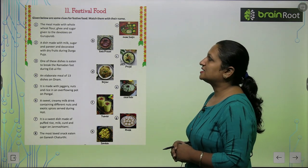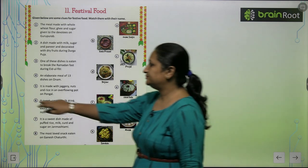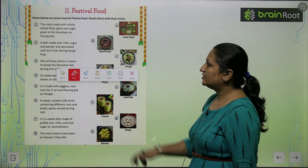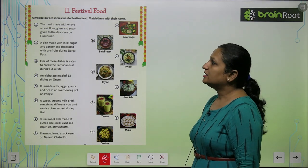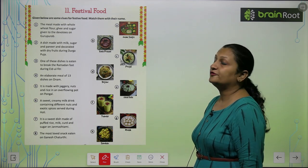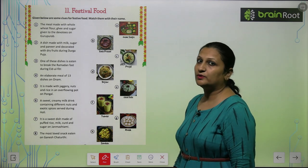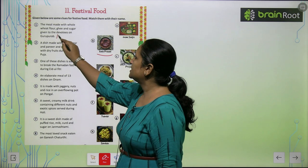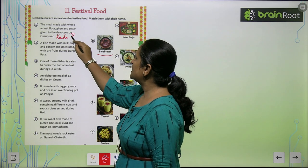Given below are some clues about festive food. Match them with their name. See the first one: the meal made with whole wheat flour, ghee and sugar given to the devotees of Guru Poorab. Toh Guru Poorab pe kya bantah hai? Gurudware mein bantah hai kada prasad. So you will write kada prasad.